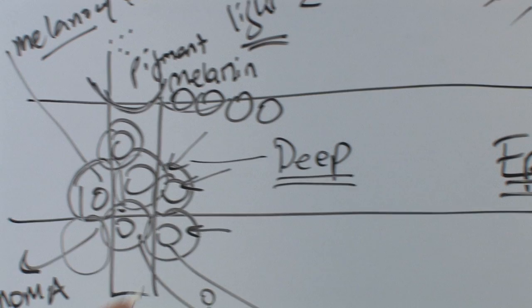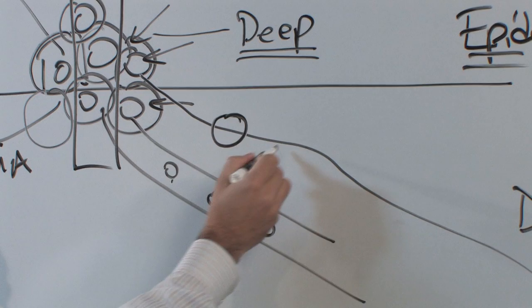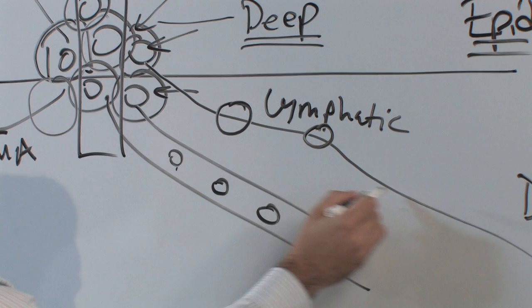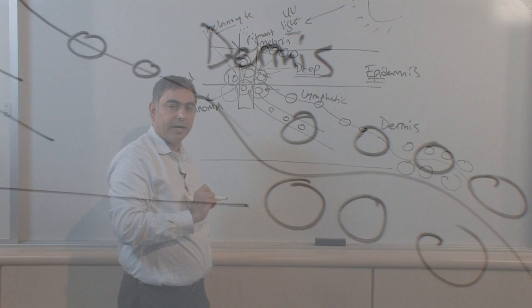Another system that sometimes is manipulated by this particular tumor is the lymphatics. And they can migrate down the lymphatics to what I call the lymph nodes. And the way I picture lymph nodes is like a highway with a bunch of restaurants on the side.